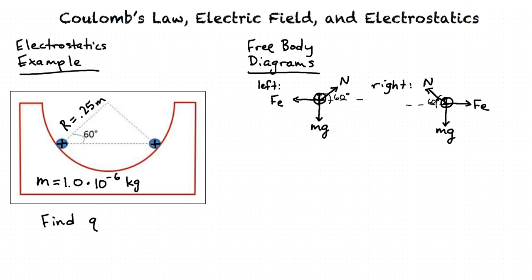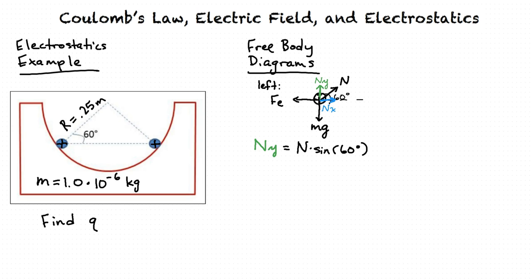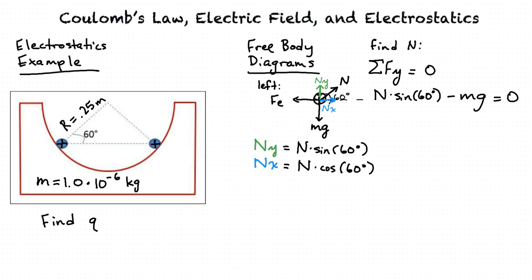To find Q, we can use Coulomb's Law and the horizontal component of the normal force. First, we find N by breaking it into horizontal (Nx) and vertical (Ny) components using trigonometric ratios, where Ny equals N times sine of 60 degrees. Setting the sum of y-direction forces equal to zero: N sine(60°) minus Mg equals zero. Solving gives N equals Mg divided by sine(60°).